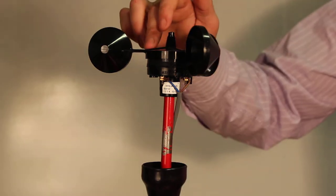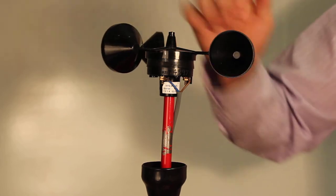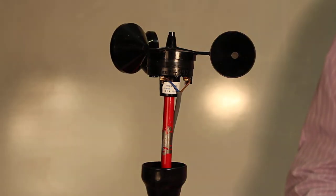In this case, as it turns, a reed switch or a magnet passes a reed switch, and it actually sends power back down to the logger.